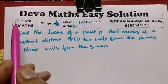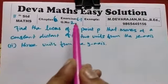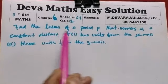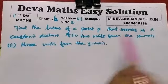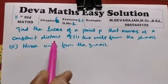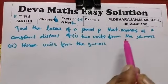Hi students, this is Deva. Now we are going to see Locus of Max chapter 6, exercise 6.1 question number 2. Find the locus of a point P that moves at a constant distance of two units.